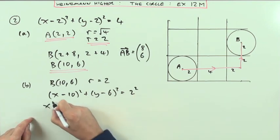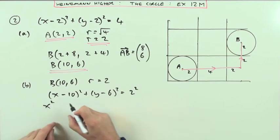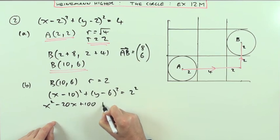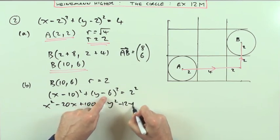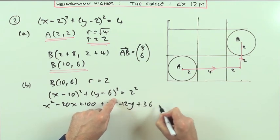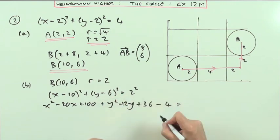But if you wanted that multiplied down, then it's just a case of multiplying the brackets, squaring a bracket. That's trivial: square the first, twice the product, square the last. Square the first, twice the product, square the last, and then just take that with four over, before bringing that over equal to zero.